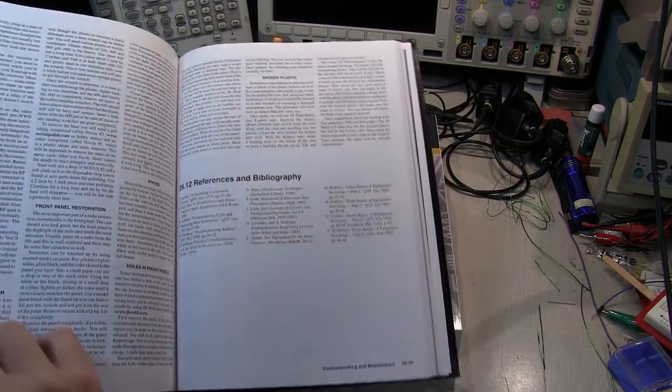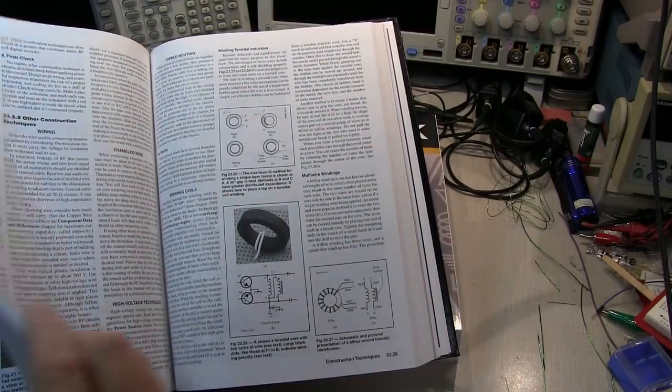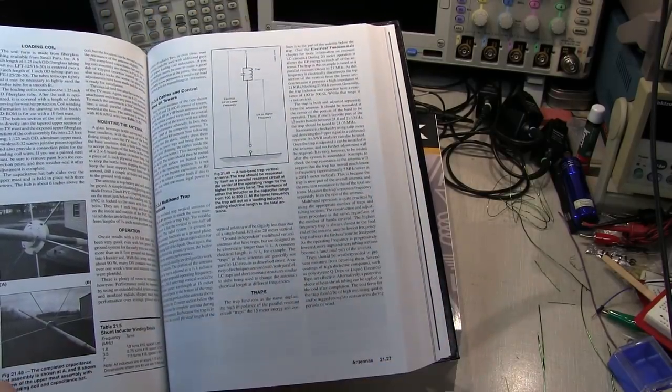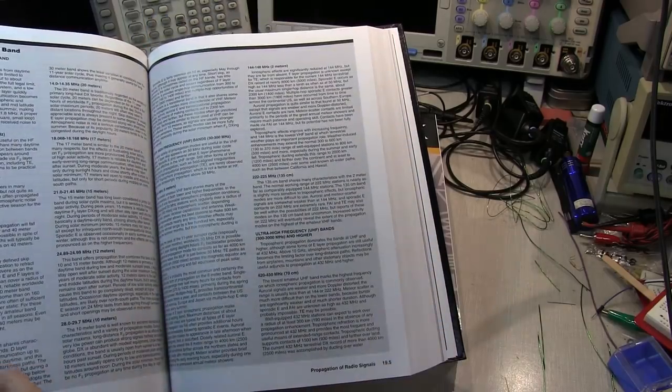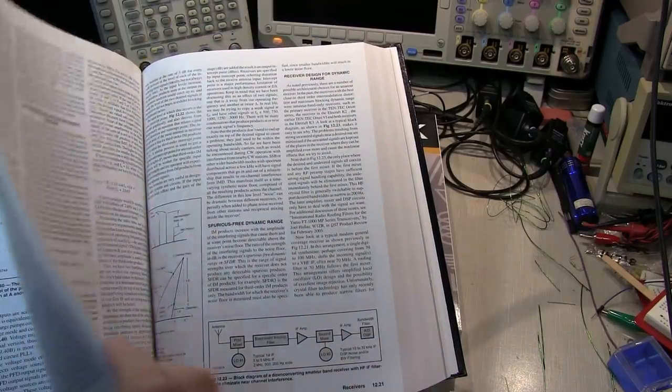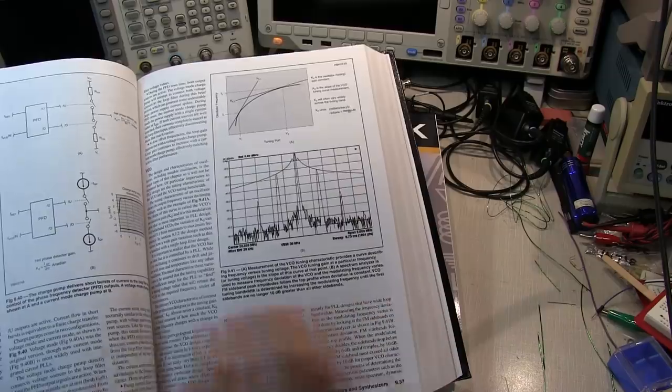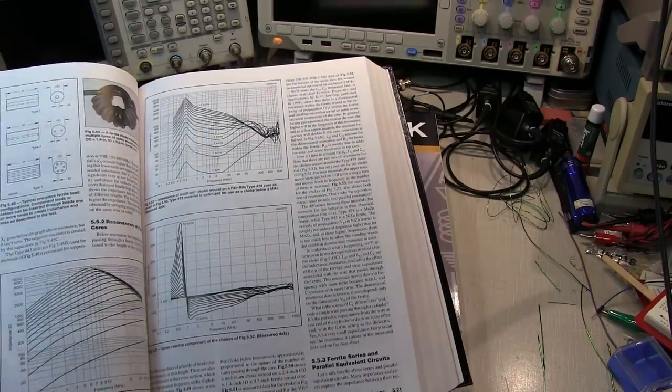There are chapters on test and measurement and troubleshooting, and of course a lot of information that's geared primarily towards the radio amateur in terms of setting up stations and building equipment. But the book really starts off with a lot of basics, right from Ohm's Law and passive components up through analog and digital electronic components and circuit design and things like that.